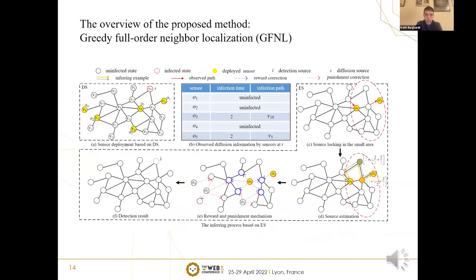The framework of GFNL includes two necessary parts: GRID-based sensor deployment strategy and direction path-based source estimation strategy. Here is an example. A presents the deployed sensor selected by DS in a network, and C to F are the source estimation process of ES.